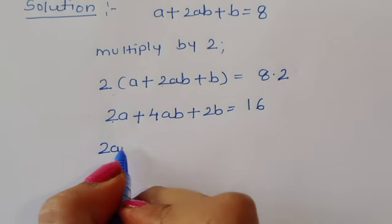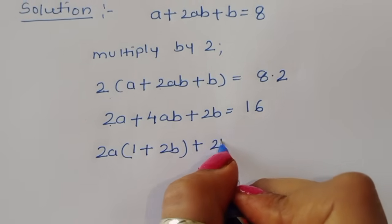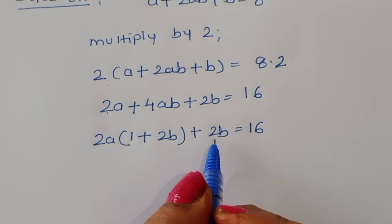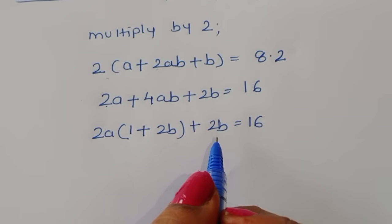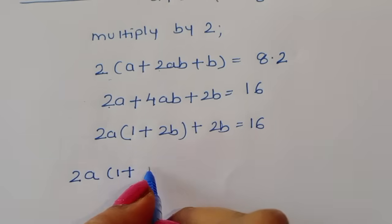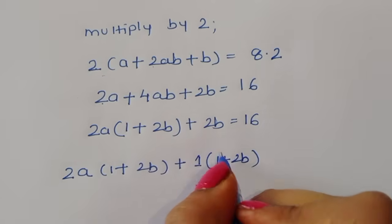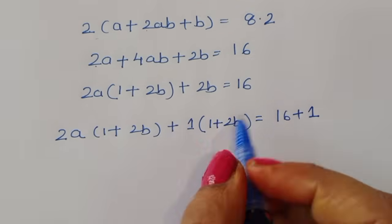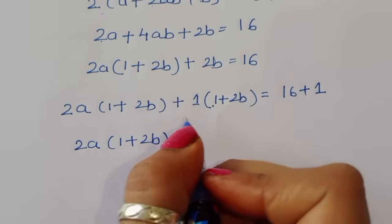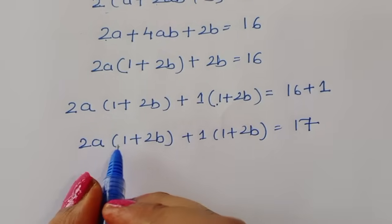Taking 2a common: 2a(1 + 2b) + 2b = 16. Now we can add 1 to both sides, so 2a(1 + 2b) + 1·(1 + 2b) = 16 + 1. We are adding 1 here and also (1 + 2b) on the left side.